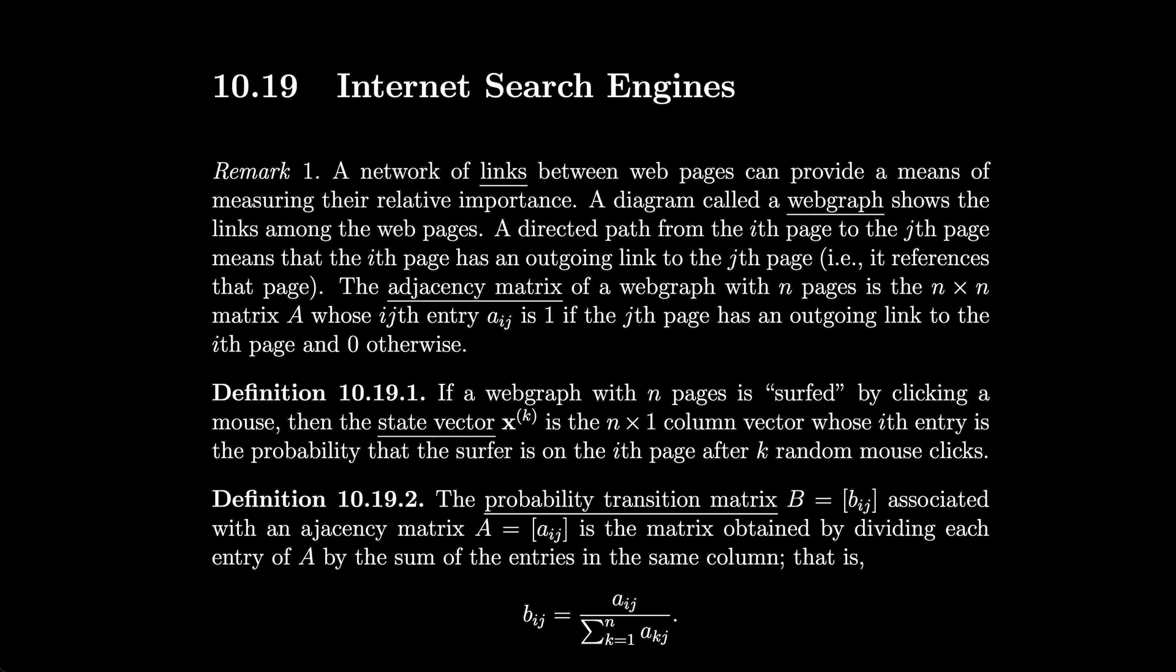If a web graph with n pages is surfed by clicking a mouse, then the state vector xk is the n by 1 column vector whose ith entry is the probability that the surfer is on the ith page after k random mouse clicks. The probability transition matrix B equal to bij associated with an adjacency matrix A equals aij is the matrix obtained by dividing each entry of A by the sum of the entries of the same column.